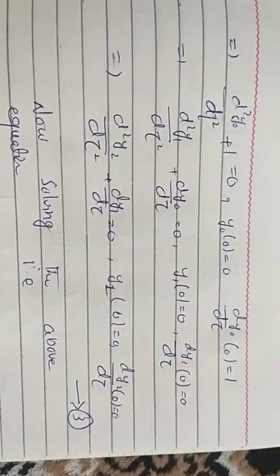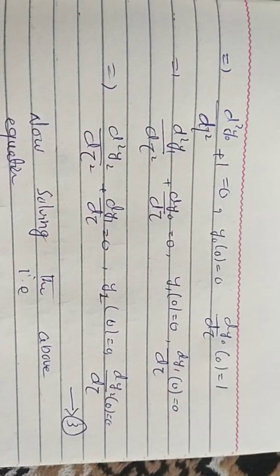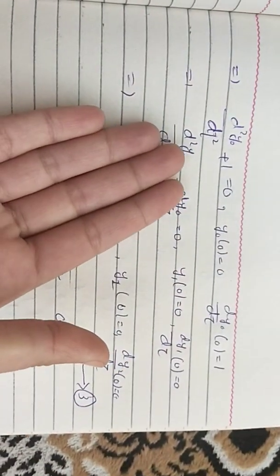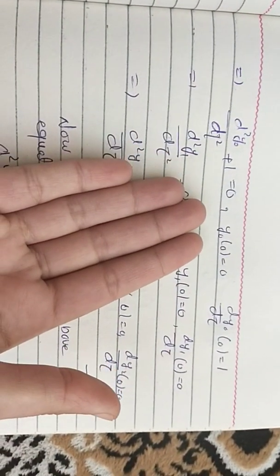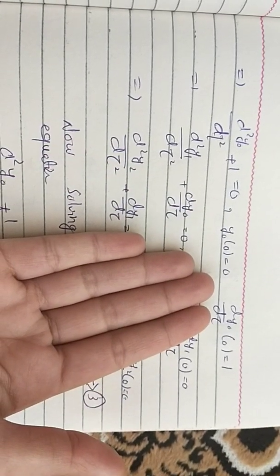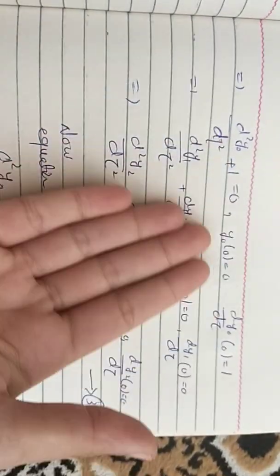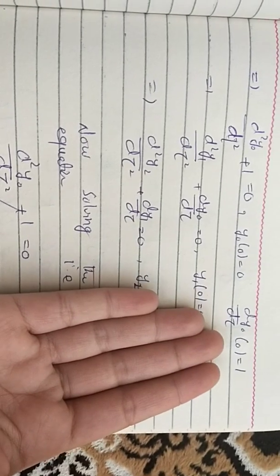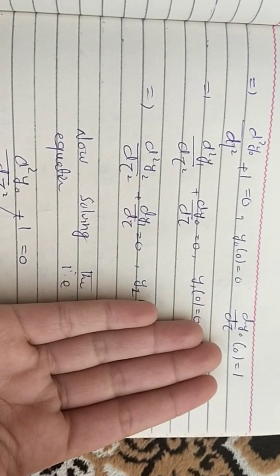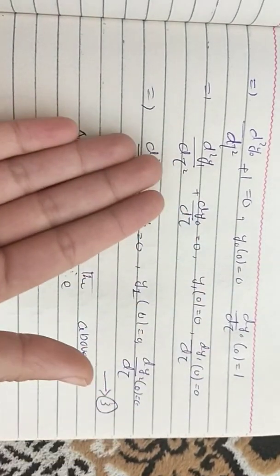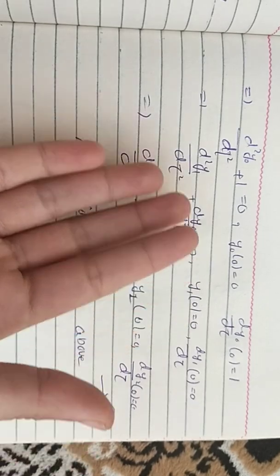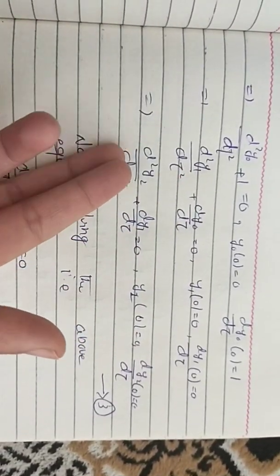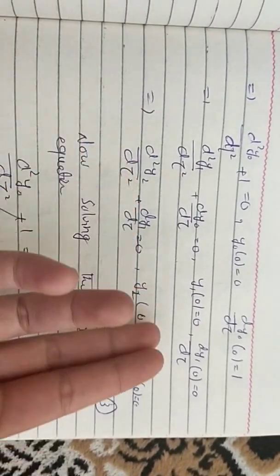Equating the coefficient of epsilon zero, it becomes d²y₀/dτ² + 1 = 0. The boundary conditions for this are y₀(0) = 0 and dy₀/dτ at 0 equals 1. Similarly we have the epsilon term and the epsilon² term.